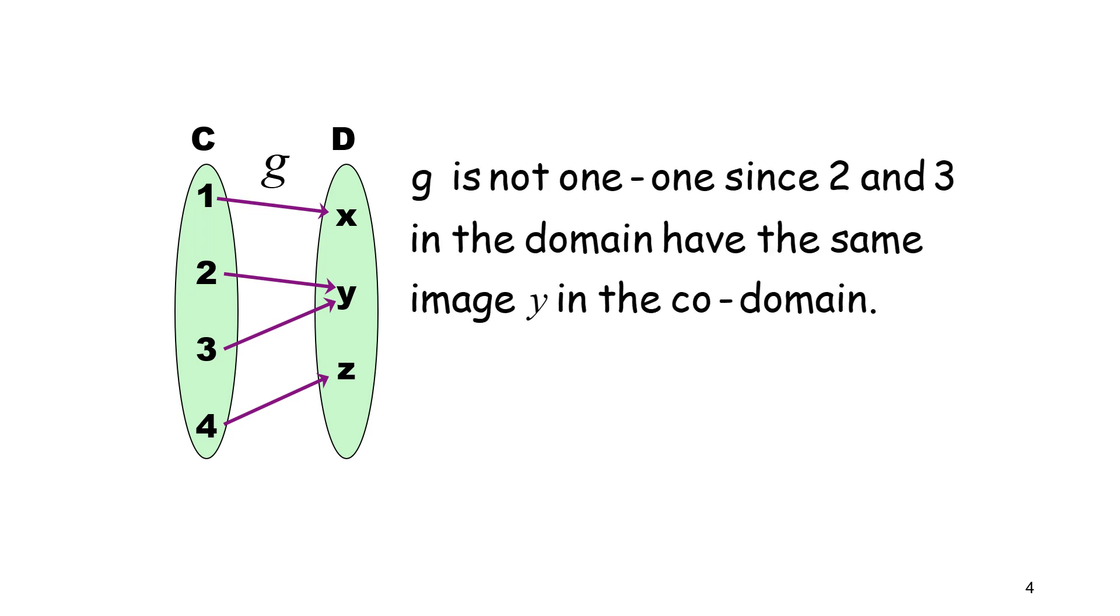We can see from the picture, 2 and 3 mapped to y. Therefore, g is not a one-to-one function since 2 and 3 in the domain have the same image y in the codomain.